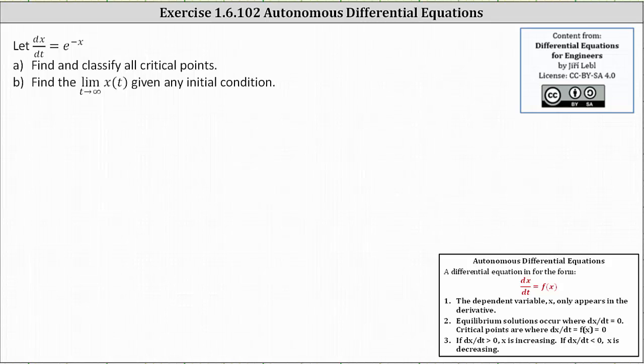We are given dx/dt equals e to the power of negative x. For part A, we're asked to find and classify all critical points. And then part B, we're asked to find the limit as t approaches infinity of x(t), given any initial condition.